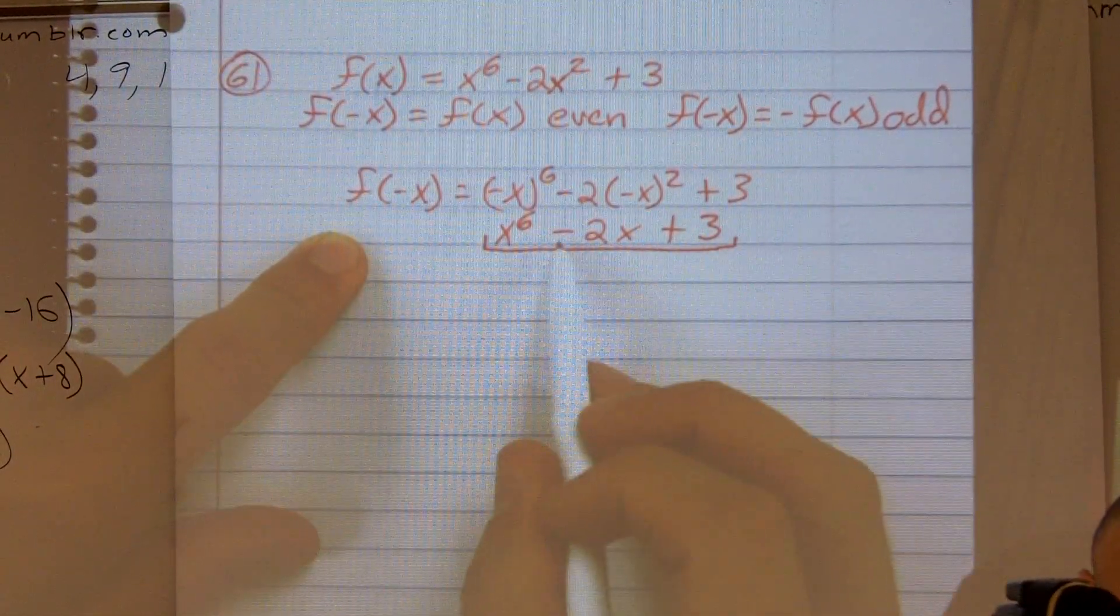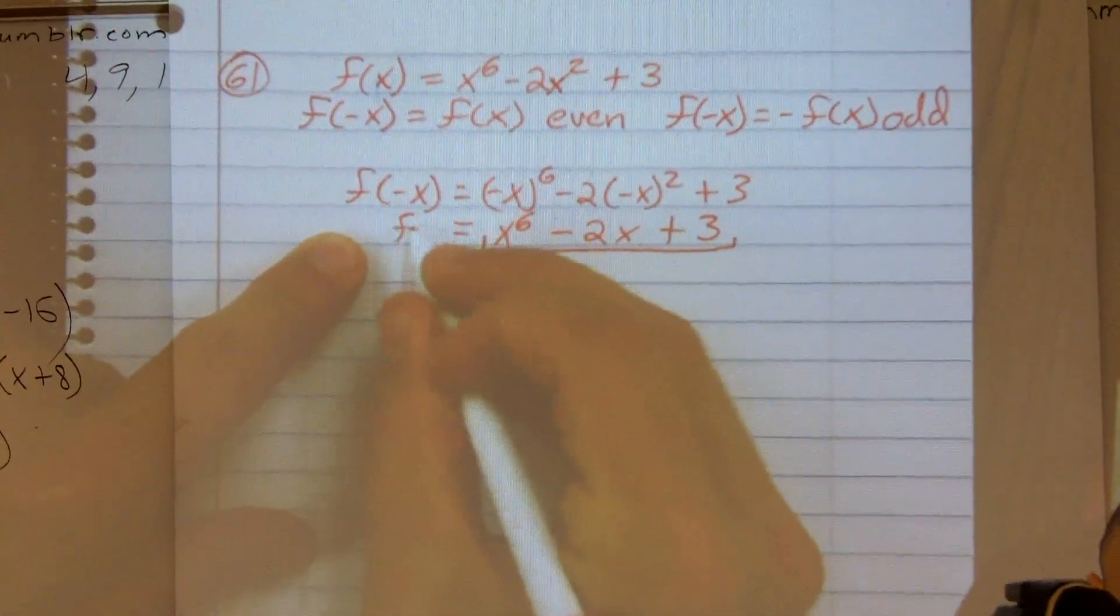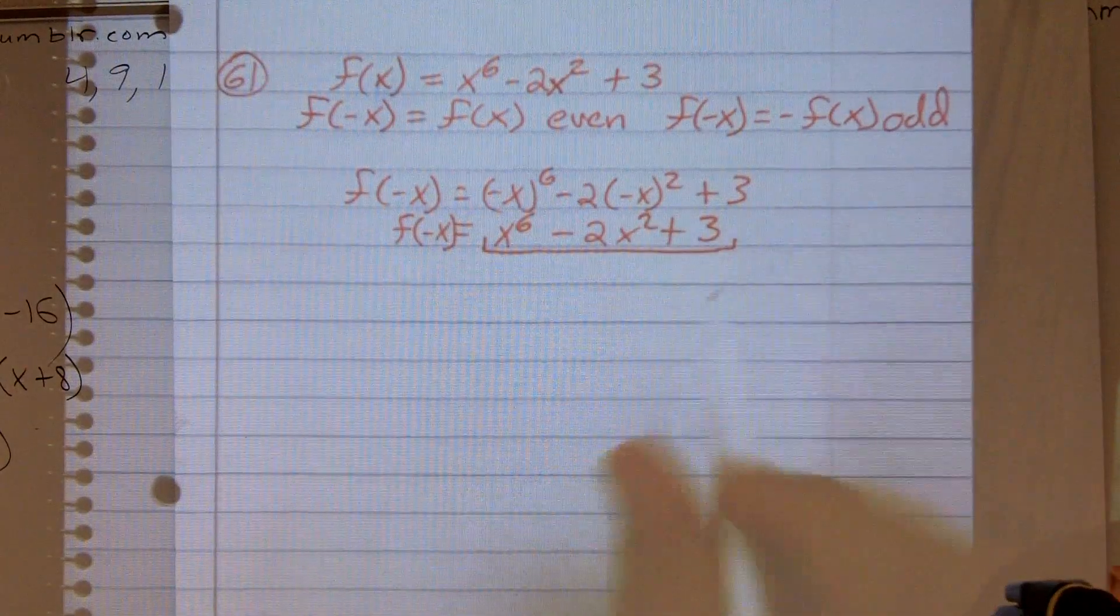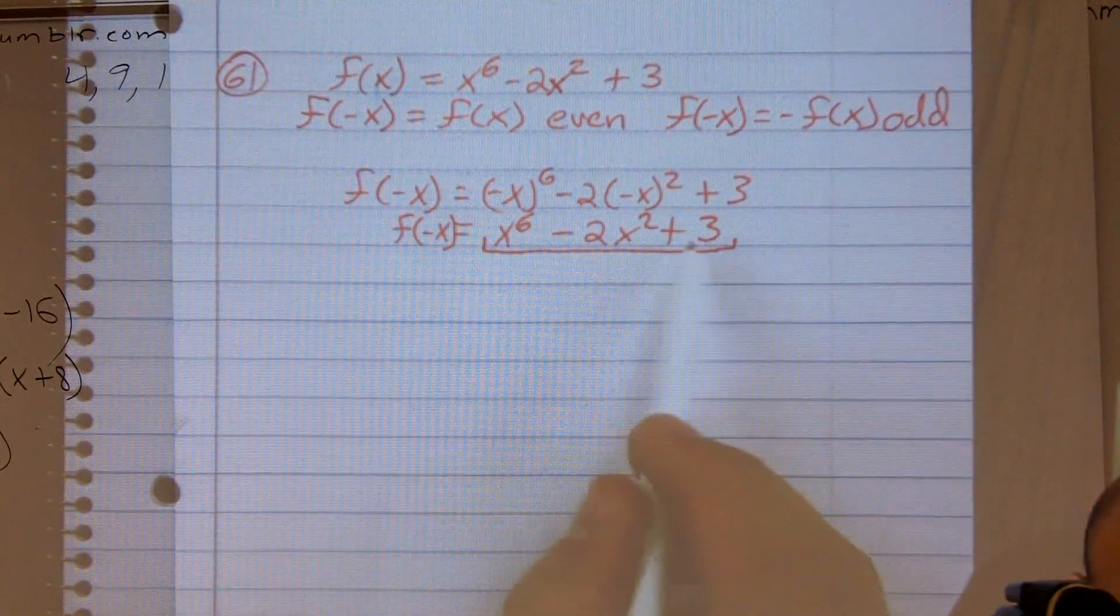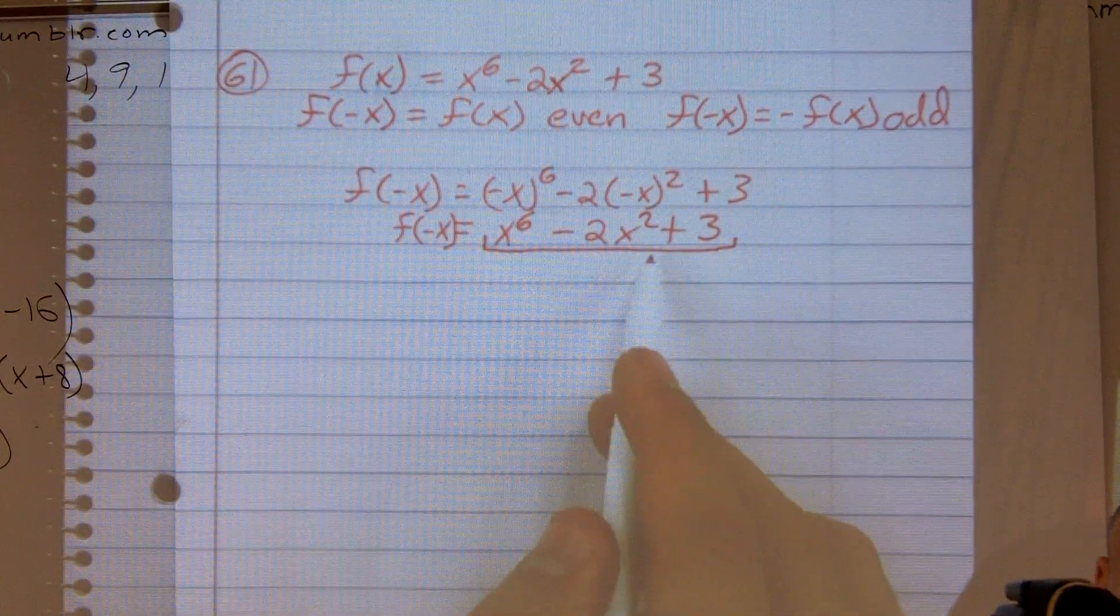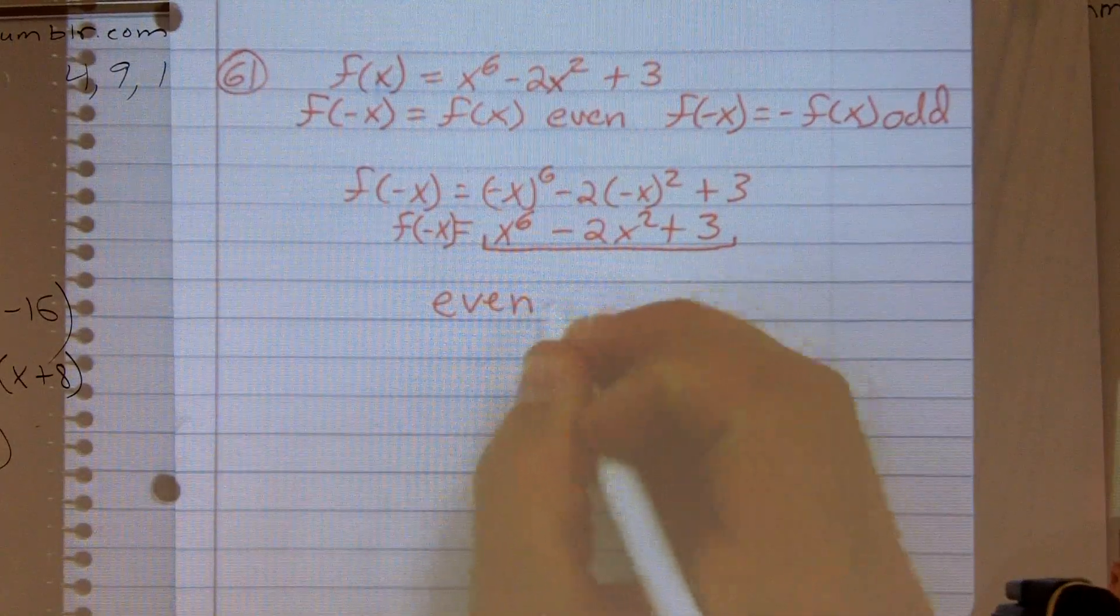Is this my original function? Yes. Oh, sorry. Is that? Well, now it is, right? It wasn't before. Is this my original function? So when I do f of negative x, I get back f of x. So therefore, it's even.